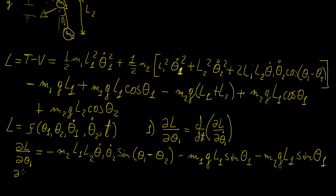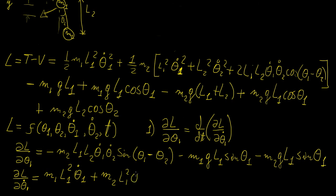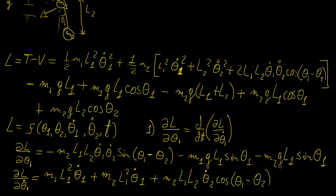Now let's differentiate with respect to theta1 dot. We get M1 L1 squared theta1 dot, plus M2 L1 squared theta1 dot from the kinetic energy terms. This one is zero, but there is also the cross term giving plus M2 L1 L2 cosine(theta1 minus theta2). Everything else disappears, so that's the partial of L with respect to theta1 dot.